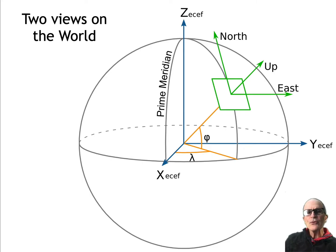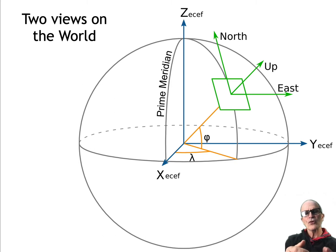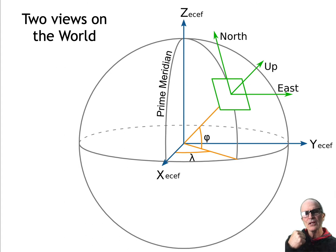We have two general views of the world. One is this rather complex latitude-longitude sphere, and the other is a planar system. In our GIS, we typically store this planar system — you see this green square — with a north arrow heading up in the y direction and an east arrow in the x direction, and up is vertically out of the plane.